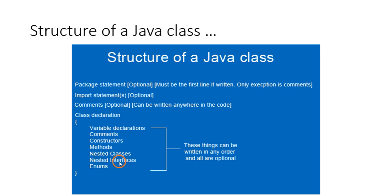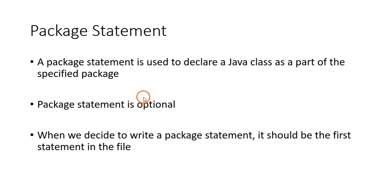In Java we also have something new called interfaces. A nested interface is an interface created within the class. You can also create enumerations. So these are all the things that you can create inside a class. Now let's see each of these things in detail.